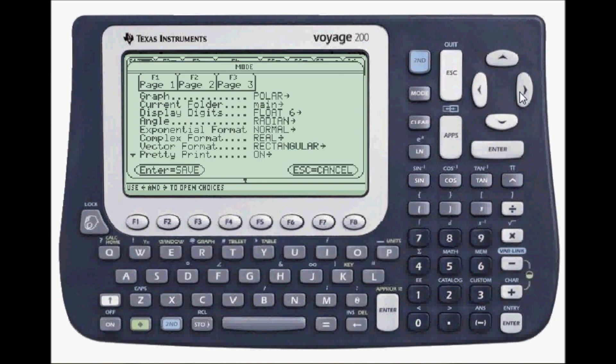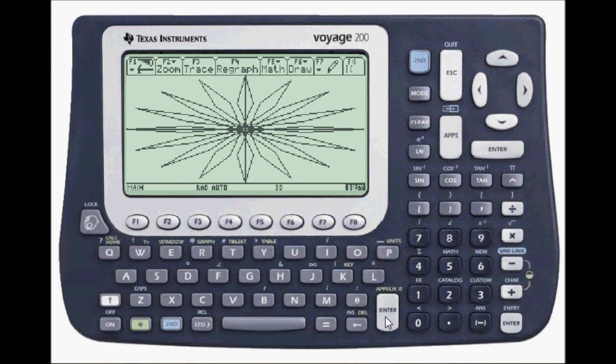Now I'm going to go to mode again, and switch to three-dimensional graphing, which is choice 5. Press enter.